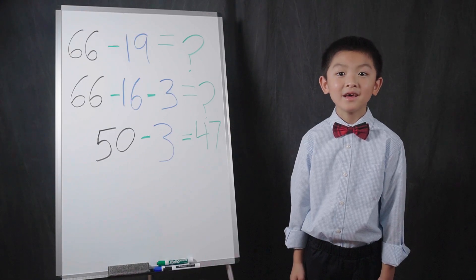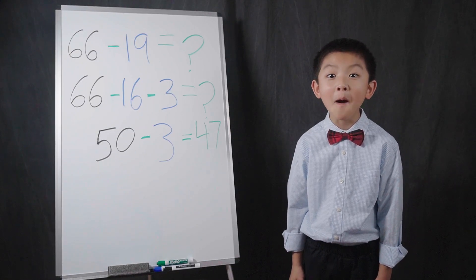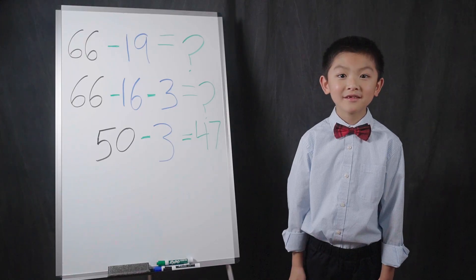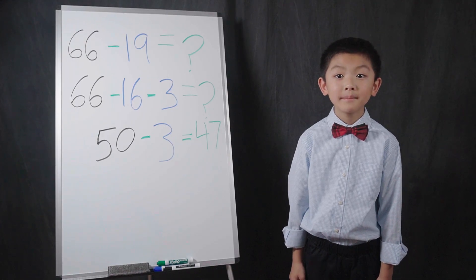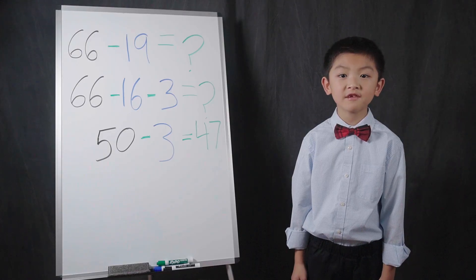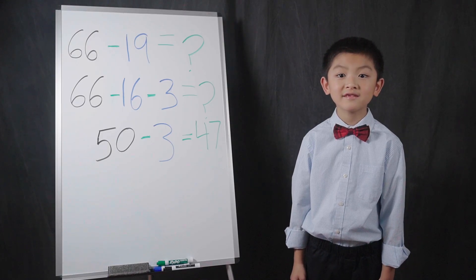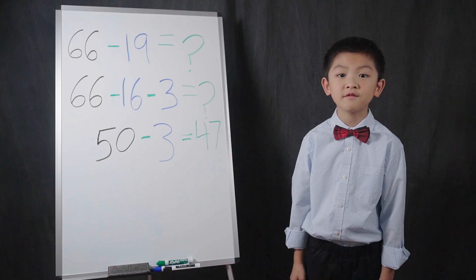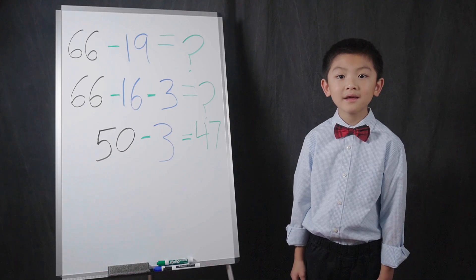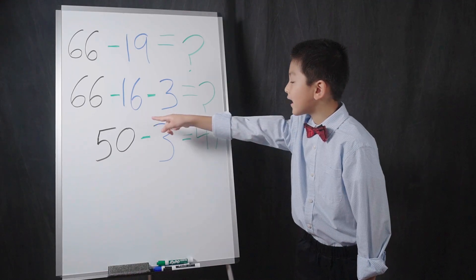Let's try that again with bigger numbers. Now, the closest multiples of 10 below 66 are 60 and 50. So, I want the left side to either become 60 or 50. I break up the 19 into 16 and 3.